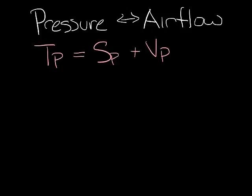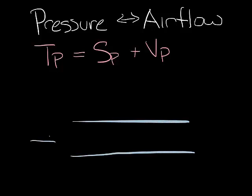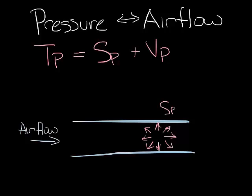When air moves through ductwork, there are two components of pressure going on: static pressure, which is exerted in all directions, and velocity pressure, which is only exerted in the direction of air flow. The sum of these is total pressure.